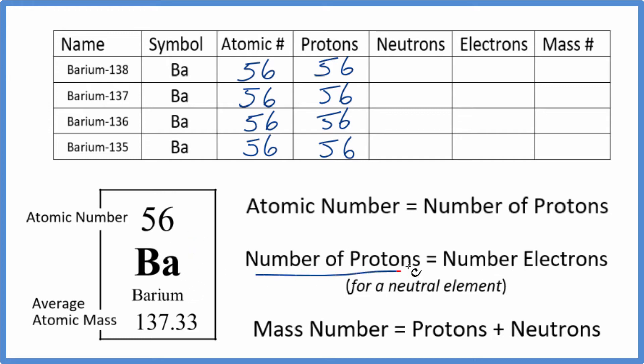They're neutral because the number of protons and electrons are the same. The positive and the negative are the same. They give you a neutral charge. So barium is going to have the same number of protons as electrons.